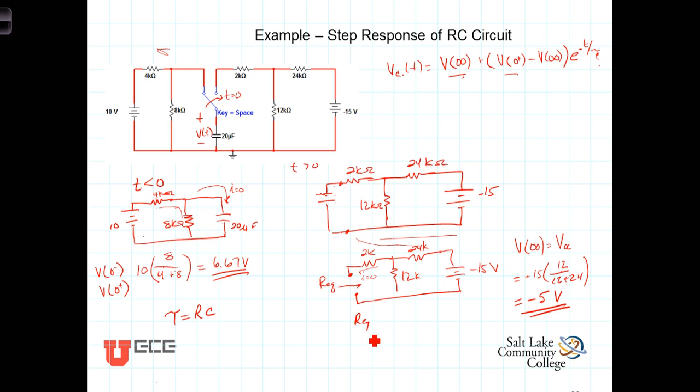So the resistance that it feels is then the equivalent resistance looking back in here, which will be Req then is equal to the 2k plus. Now, how do we get the equivalent resistance? Short out or deactivate the voltage source, which we do by replacing it with a short. And that brings the 12k and the 24k ohm resistors into parallel.